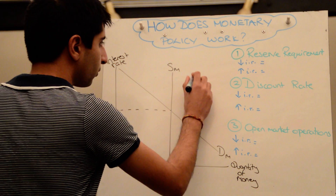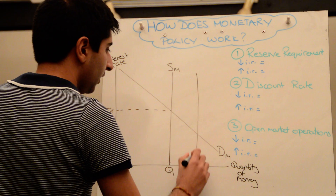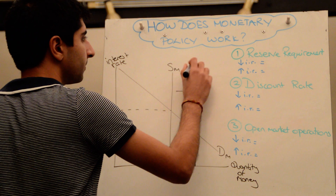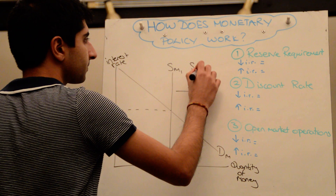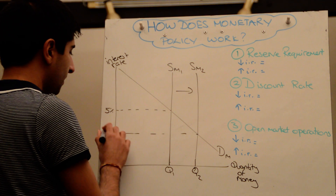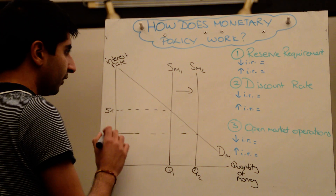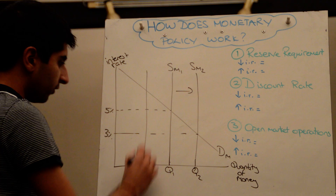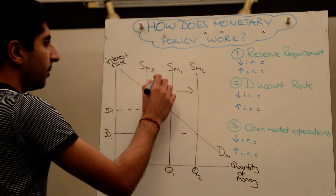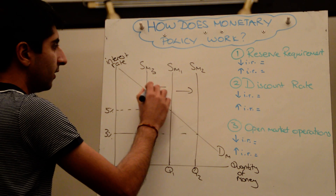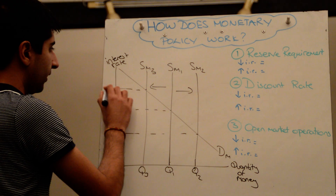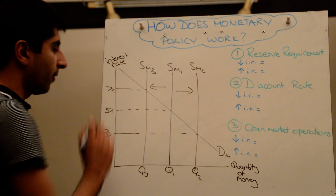So if it wants to reduce interest rates, the Bank of England needs to find a way to shift the supply of money to the right. In doing so, that will reduce interest rates — maybe from 5% to 3%. Or if it wants to increase interest rates, it needs to shift the supply of money to the left, which will increase the interest rate to 7%.